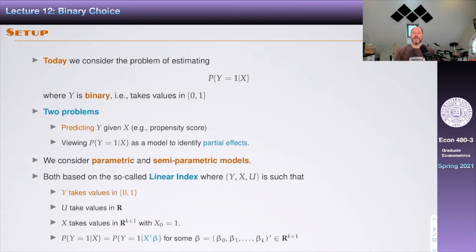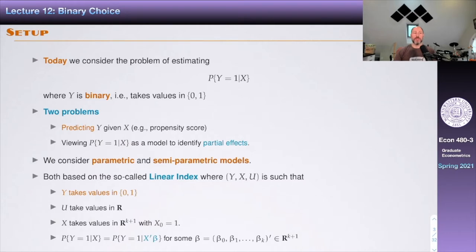For that matter, any method that can give you a prediction of Y given X could work — we could use nonparametric tools like Nadaraya-Watson or local linear, and so on. However, sometimes we will want to view this probability as coming from a structural model. In that case, we may want to care about partial effects, causal effects, and so on. This is traditionally the approach taken in IO.